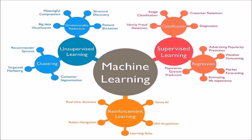There are three types of machine learning. The first is supervised learning, the second is unsupervised learning, and the third is reinforcement learning. In supervised learning there are two parts: classification and regression. Each method has its own techniques.